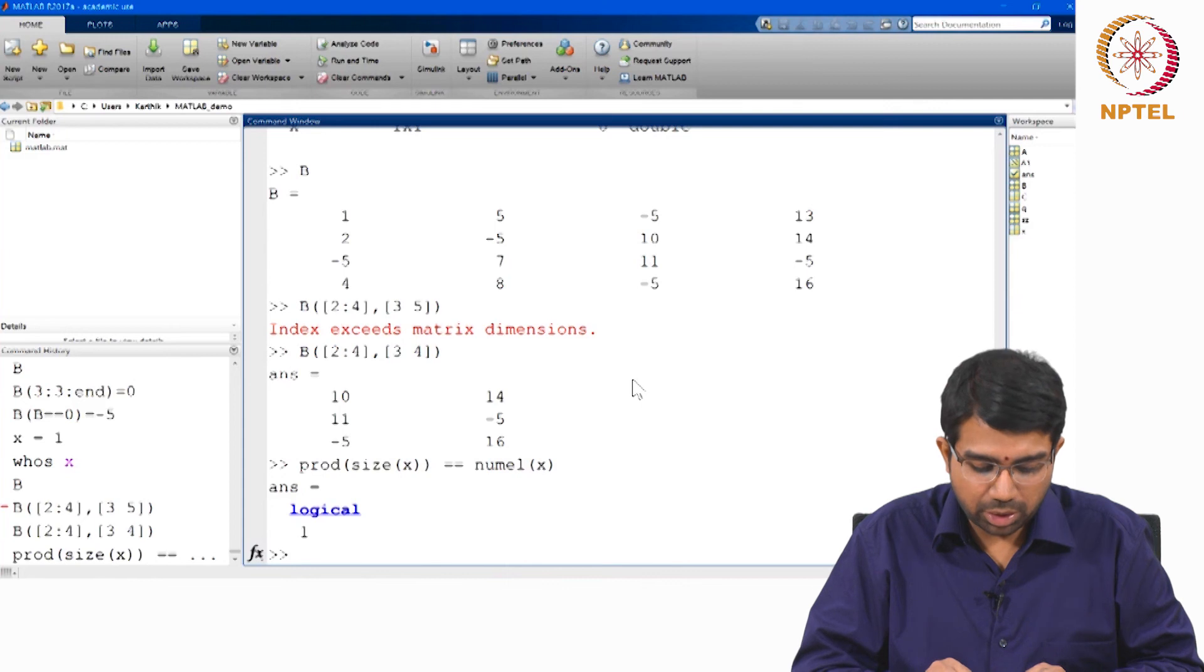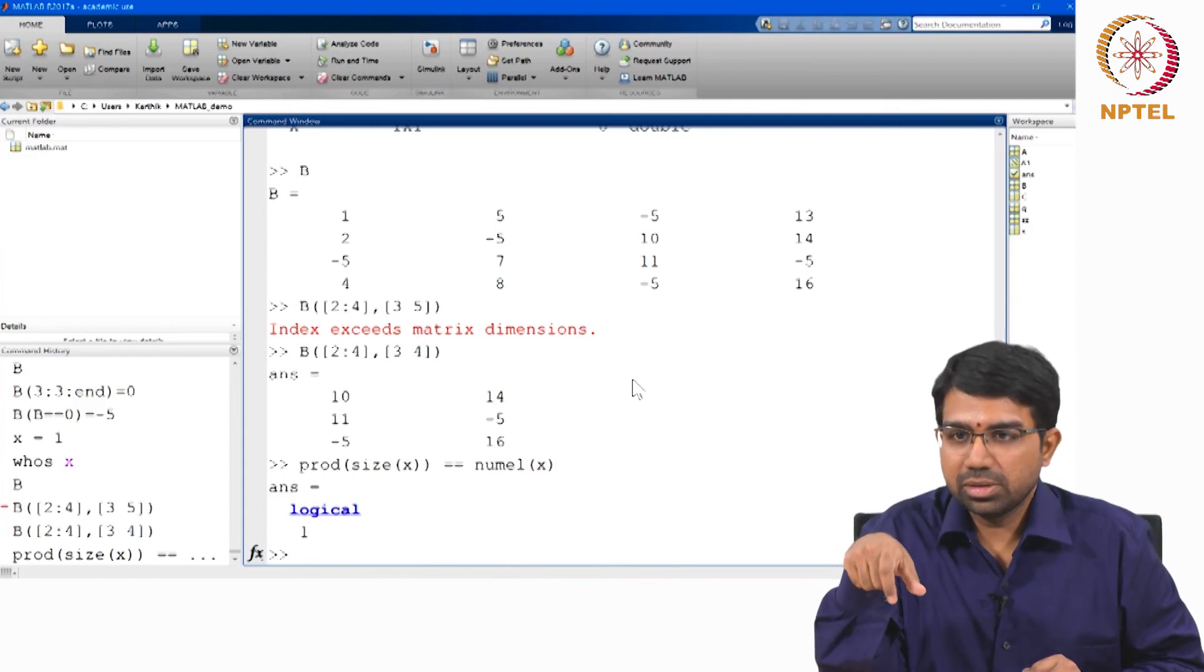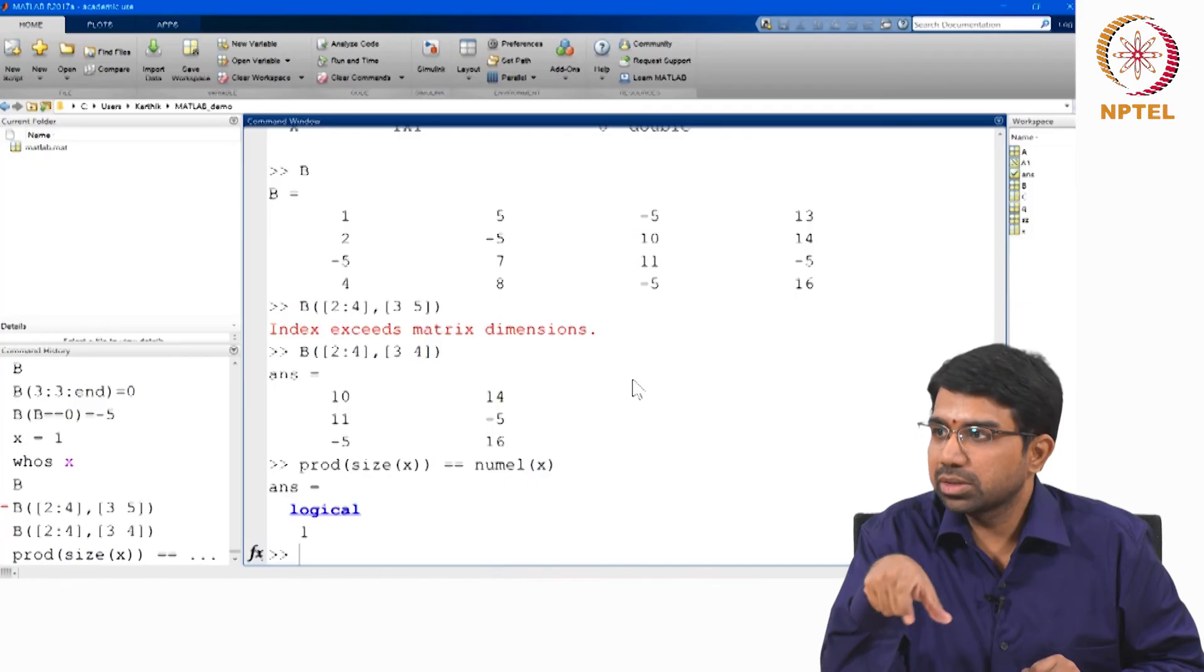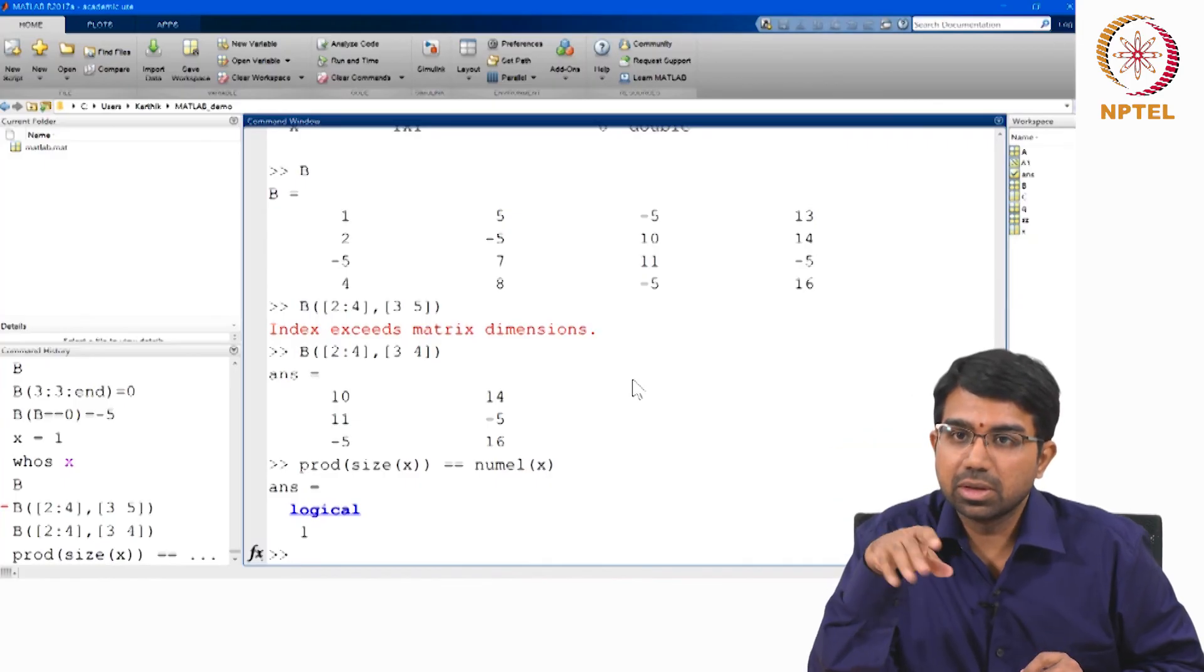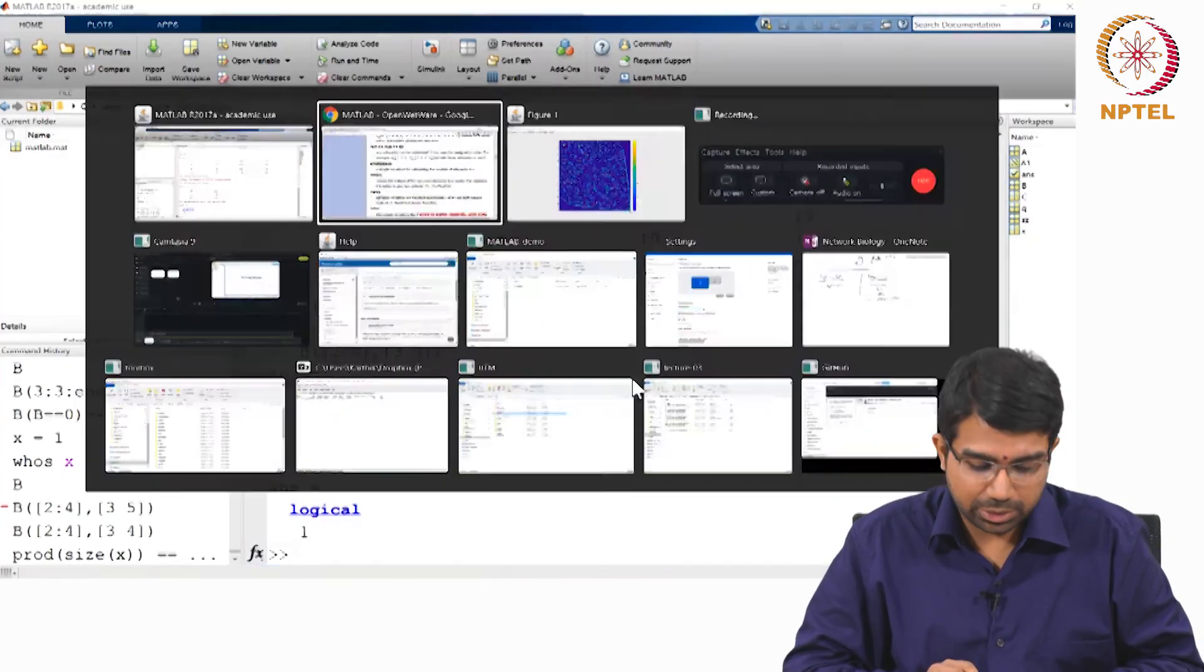So prod will basically multiply everything that you give it. Size of x will tell you what is the dimensions of x and you can basically see the number of elements of x, that is the other way to count the number of elements in x.